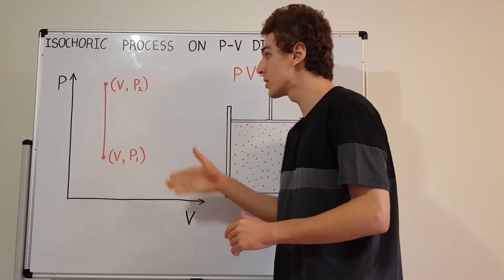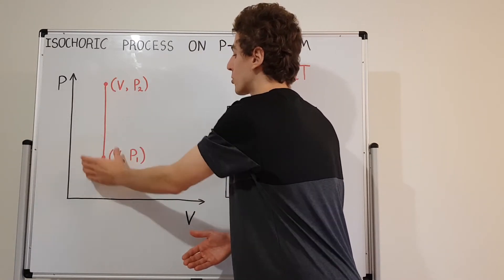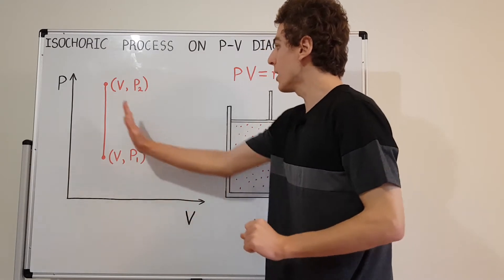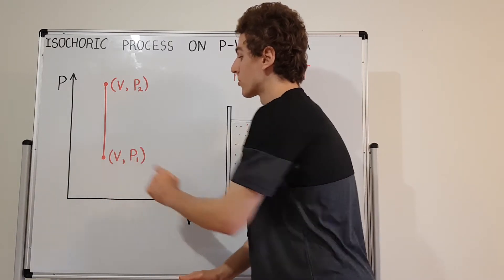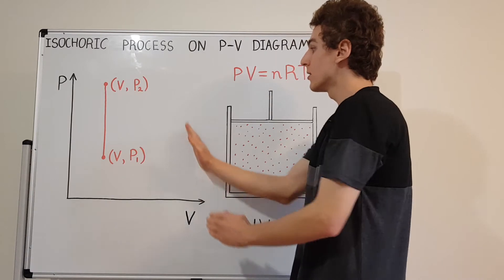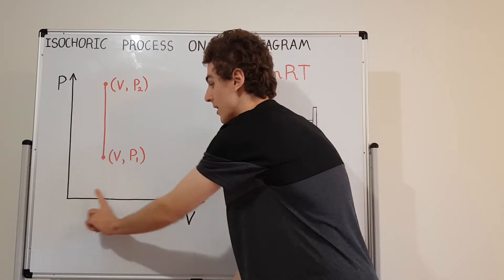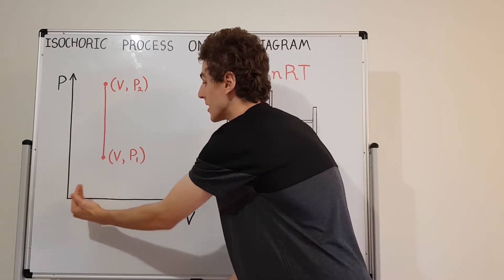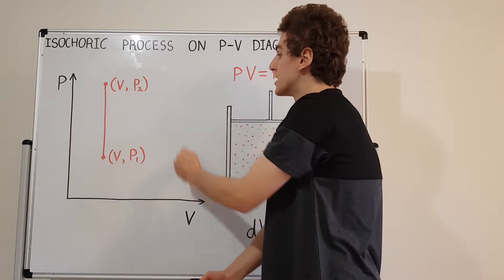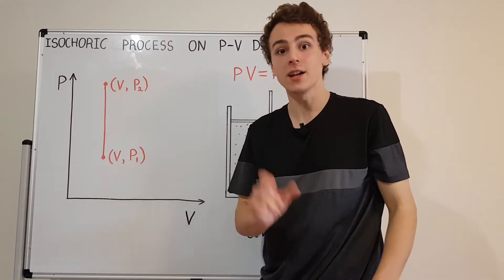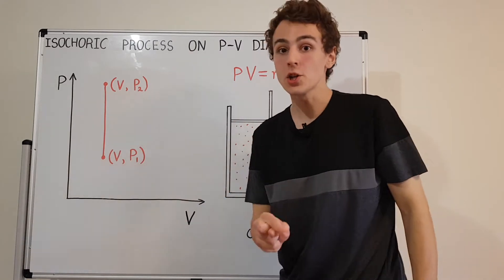So what does an isochoric process look like on the PV diagram? It's a vertical line — this is one isochore. A vertical line closer to the pressure axis will have a smaller volume, while a vertical line further to the right will have a larger volume. When you stay on the vertical line, you're maintaining your volume. So an isochoric process will stay on that vertical line.